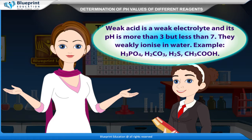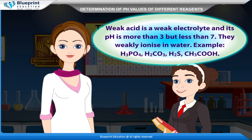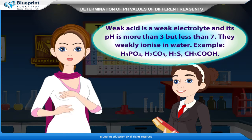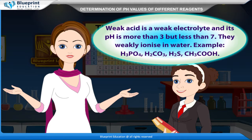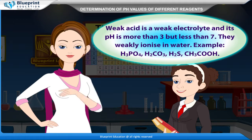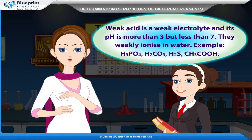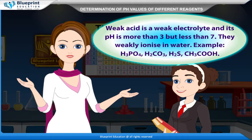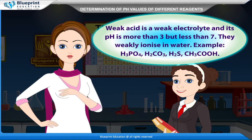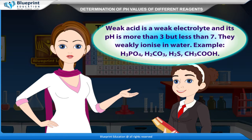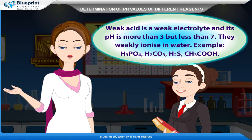A weak acid is a weak electrolyte and its pH is more than 3 but less than 7. They weakly ionize in water. Examples: H3PO4, H2CO3, H2S, CH3COOH.